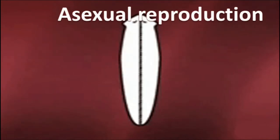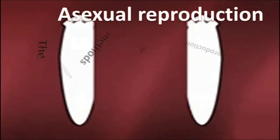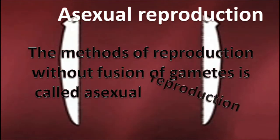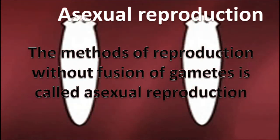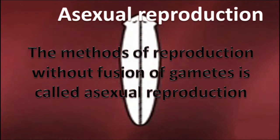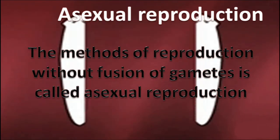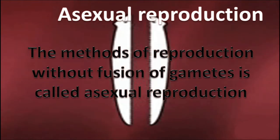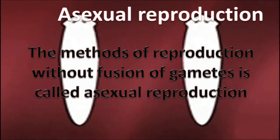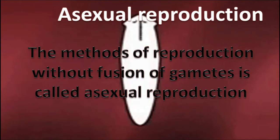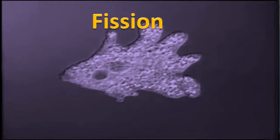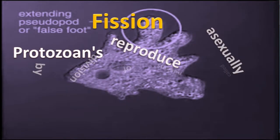Asexual Reproduction. The method of reproduction without fusion of gametes is called asexual reproduction. In this process, there is no need of male and female gametes — single organisms reproduce new ones. It takes place by various methods.